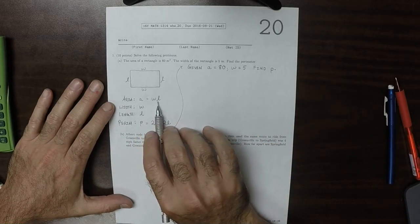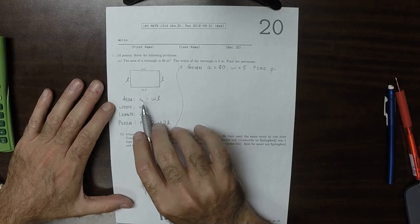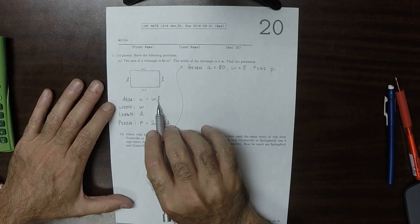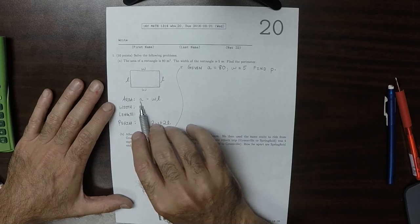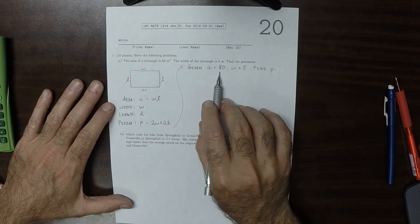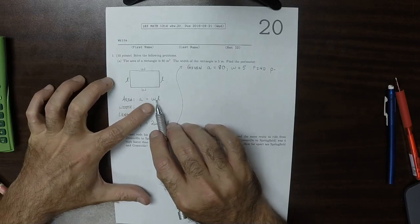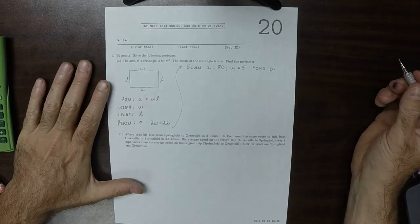However, we have a formula involving L. It has three variables in it: A, W, and L. We need L. So do we have A? Yes. Do we have W? Yes. So that's enough to find L.